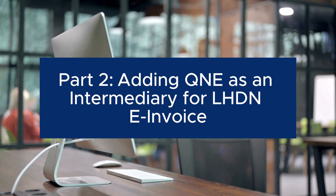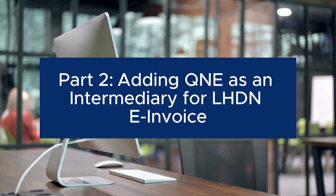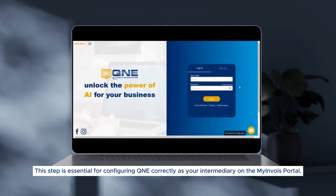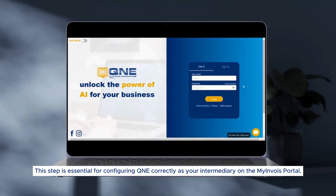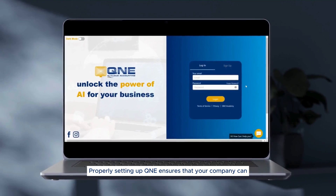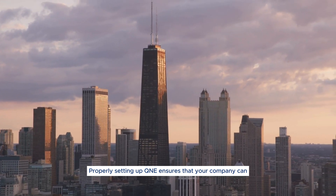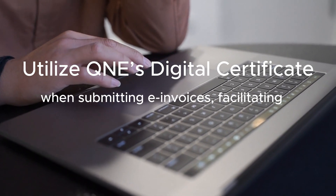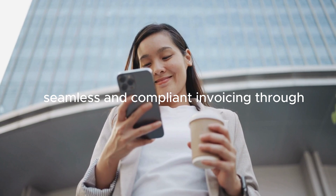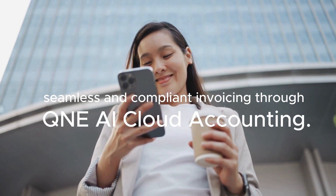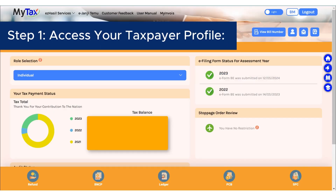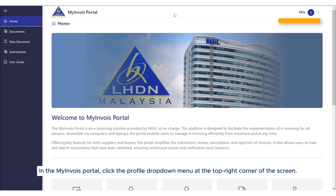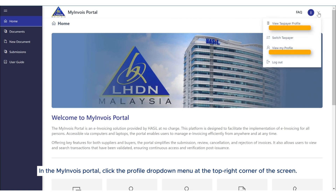In Part 2, we'll focus on adding Q&E as an intermediary for LHDN e-invoice. This step is essential for configuring Q&E correctly as your intermediary on the MyInvoice portal. Properly setting up Q&E ensures that your company can utilize Q&E's digital certificate when submitting e-invoices, facilitating seamless and compliant invoicing through Q&E AI Cloud Accounting. Step 1: Access your taxpayer profile. In the MyInvoice portal, click the Profile drop-down menu at the top right corner of the screen.